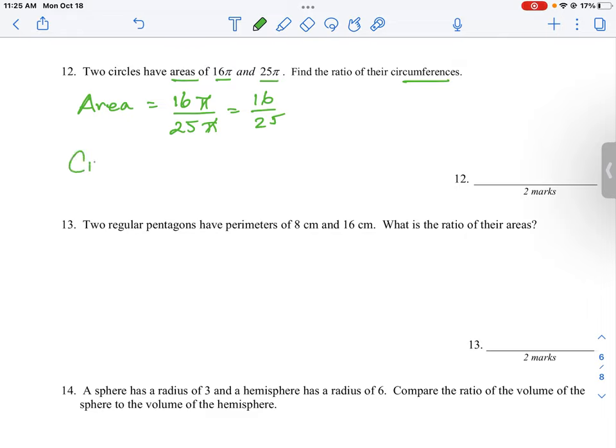If we want to find what is the ratio of the circumferences, we need to undo the squaring that gives us the area. So the ratio for circumference is going to be the square root of 16 over the square root of 25, which is going to be 4 over 5.